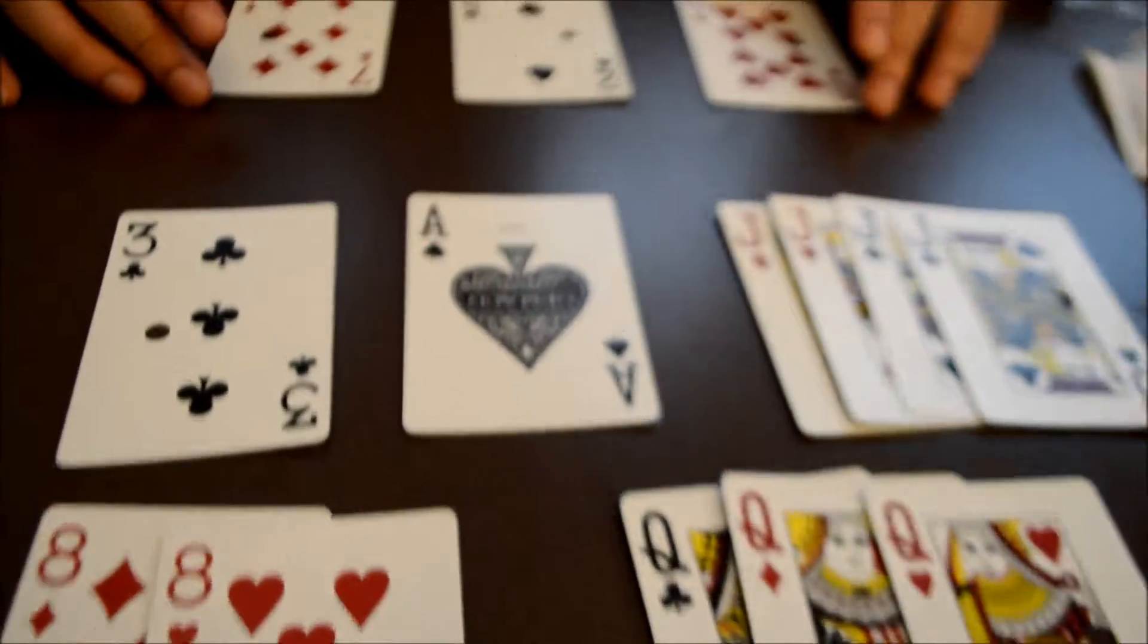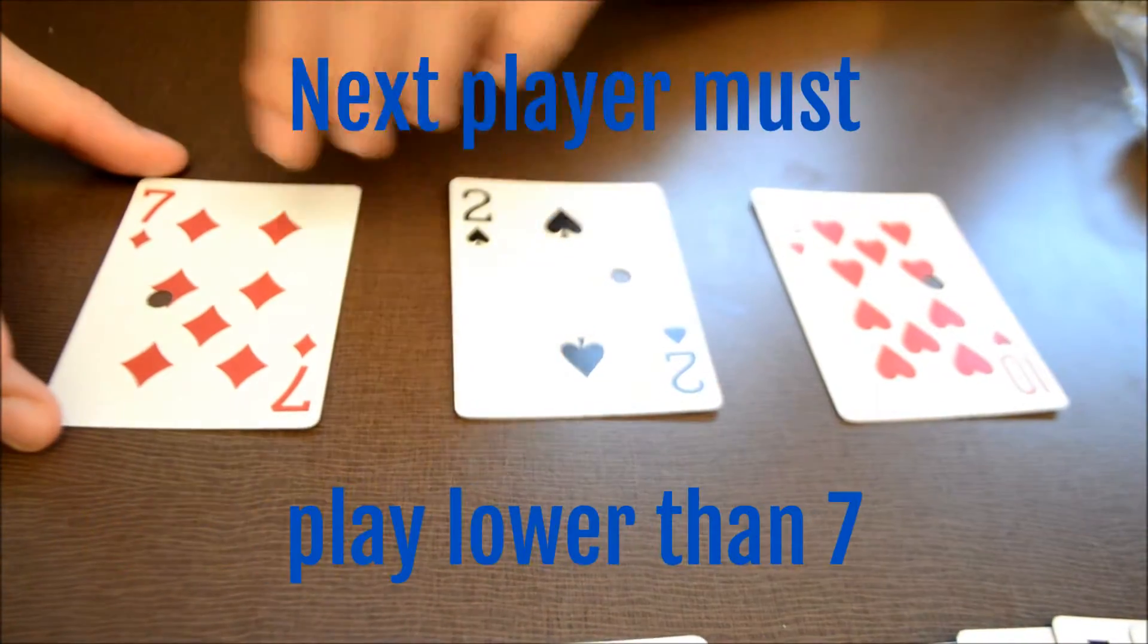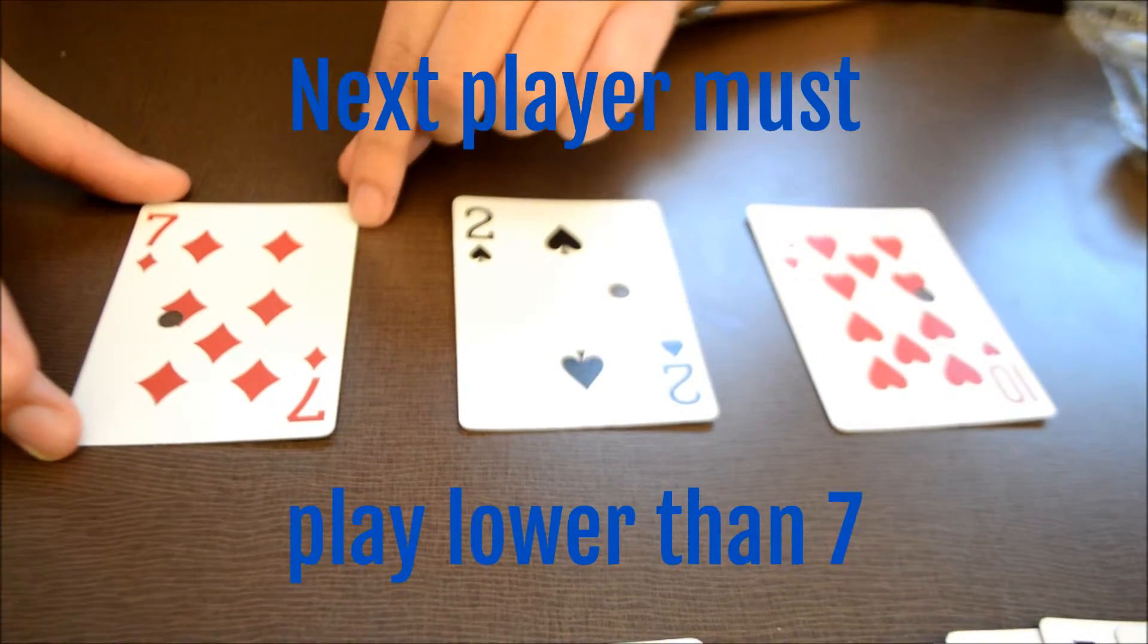So these three are the special cards of the game: the seven, two, and ten. When you play a seven, the person right after you has to play a card lower than a seven.